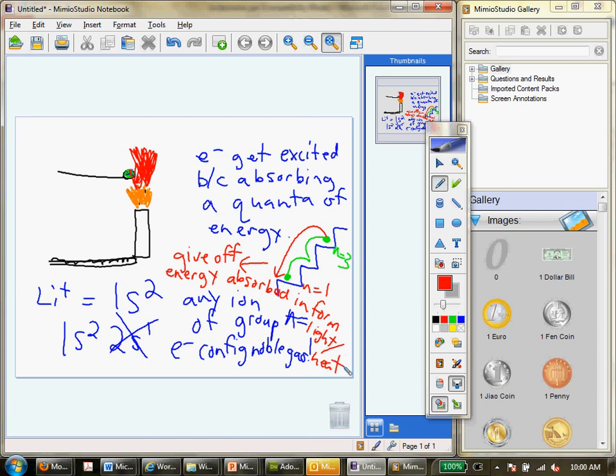So it gives off the heat, the energy absorbed, and its characteristic color. They're all different depending on what it is. They're all different, and when it goes back to the ground state, so N equals 1 is the ground state. Ground state.